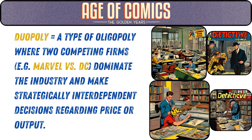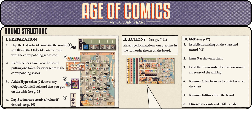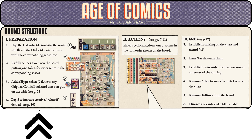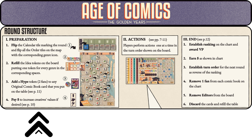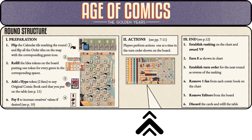Now, a game run-through of two rounds for two players — a duopoly market structure. Duopoly is a type of oligopoly where two competing firms, for example Marvel vs DC, dominate the industry and make strategically interdependent decisions regarding price or output. Each round is divided into three phases. Phase one — preparation: step one, flip the calendar tile and flip all the sales order tiles with the corresponding genre icon; step two, refill idea tokens on the board; step three, add a hype token to any original comic book card on the table; step four, pay money to increase creative values if desired.